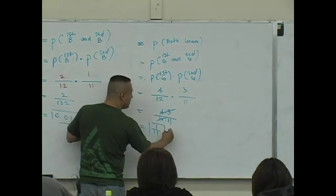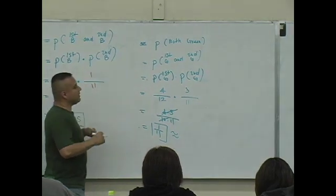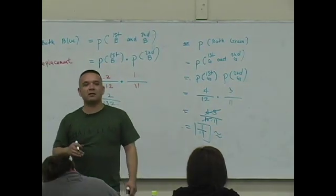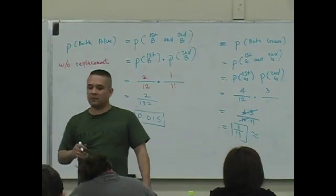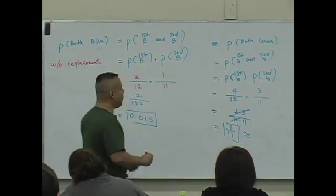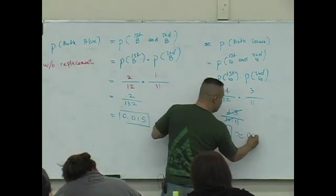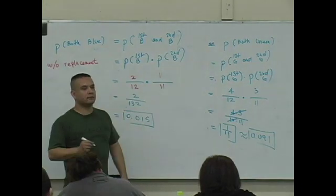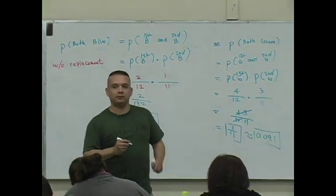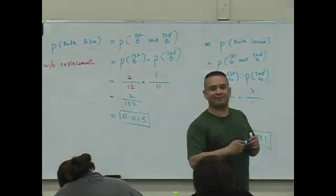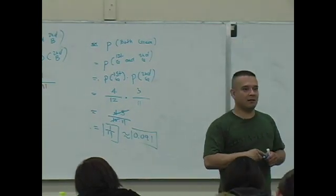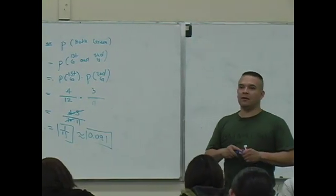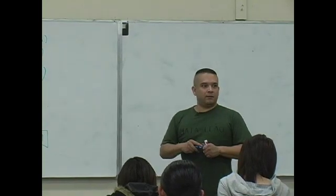What is this as a decimal approximated to the nearest thousandths? Zero point zero nine one. Okay, you guys okay with this? Let's keep going — see if you're awake.